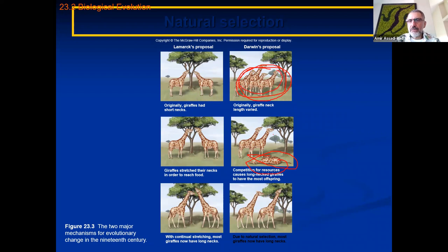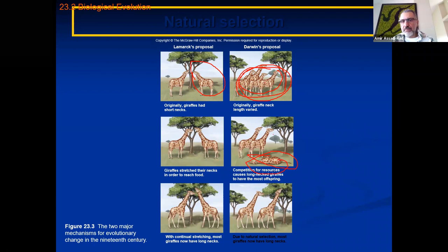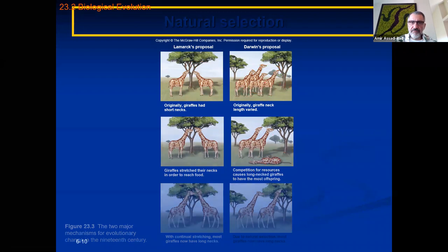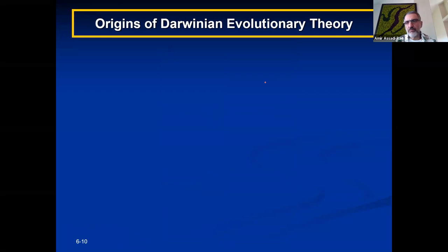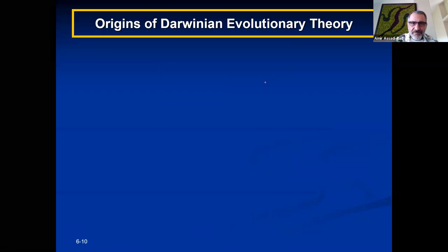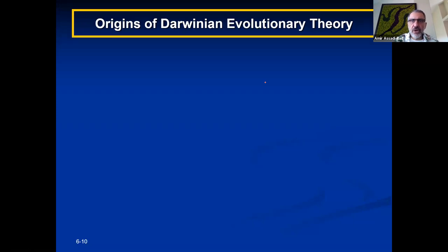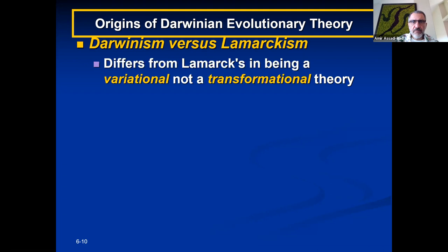That's the biggest difference: Lamarck said individual organisms evolved and their neck becomes longer, while Darwin said it was a population. Based on the laws of genetics we know now, Darwin's view is accepted. Both Darwin and Wallace — I should say Darwin and Wallace — proposed this. Darwin differs from Lamarck in that it's variation, not transformation. Evolution occurs in populations.